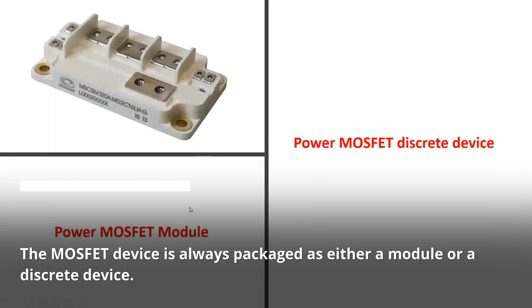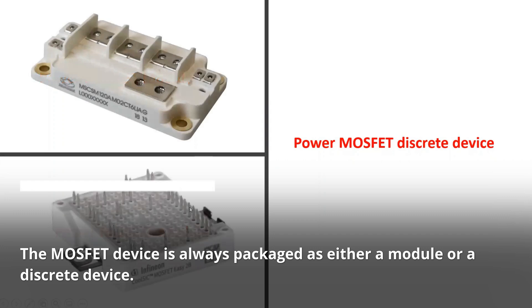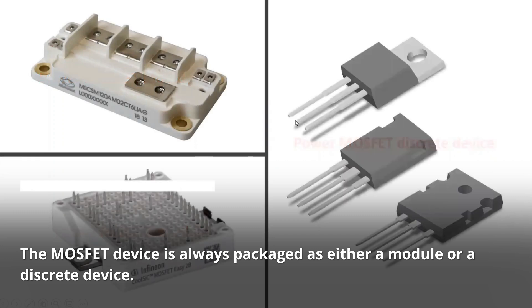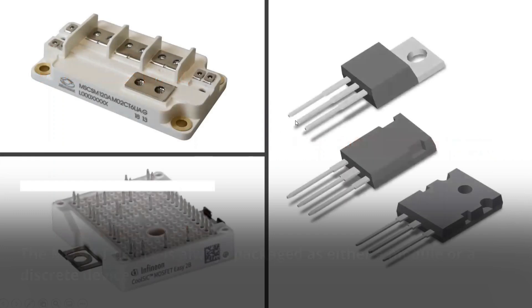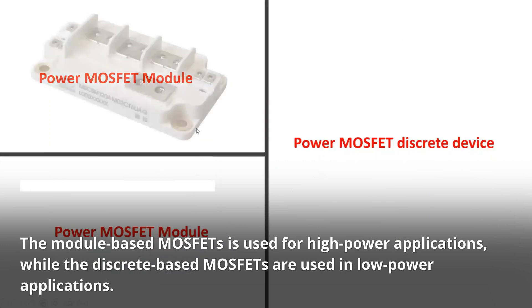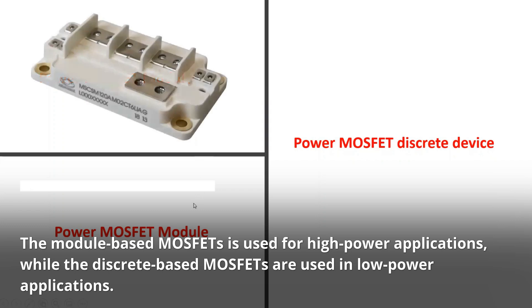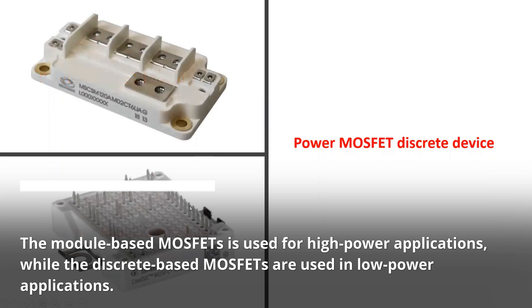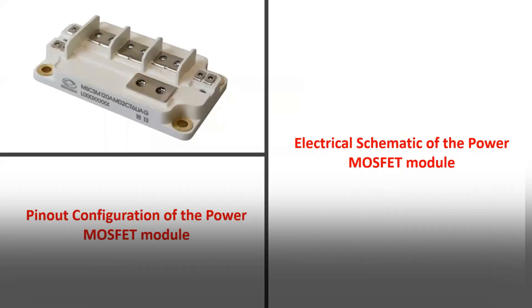The MOSFET device is always packaged as either a module or a discrete device. Module-based MOSFETs are used for high-power applications, while discrete-based MOSFETs are used in low-power applications.